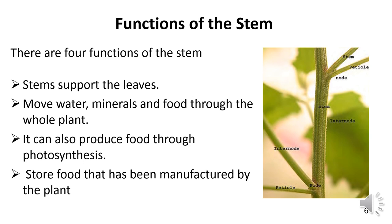Stems have many important functions in plants. They are responsible for the size and shape of the plant. Some are made up of wood and some are herbaceous. Stems support the leaves and are able to stretch them into the best position for catching sunlight. They move water, minerals, and food throughout the plant body. Stems can also produce food through photosynthesis, though this only occurs in plants with small or no leaves. Stems also store food that has been manufactured by the plant.